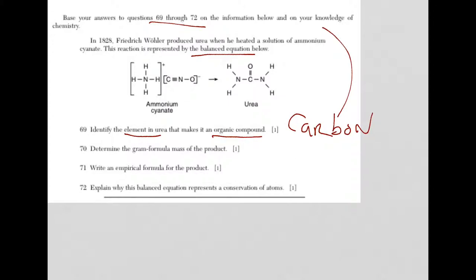Question 70: Determine the gram formula mass of the product. Your gram formula mass, you have to take into account the elements, the number of times they appear in the formula, and you need to get the gram formula masses off the periodic table. The product is urea.